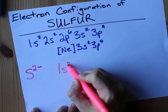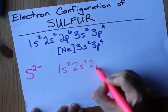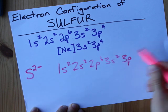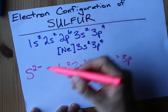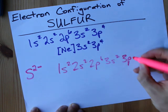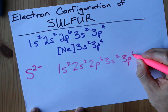You're just going to add them to the subshell that was only partially full before. So I can rewrite the whole thing. 1S2, 2S2, 2P6, 3S2, 3P. Now, it was 4 in the neutral atom. But when you have a 2 minus charge, you've got to add 2 to that. So that is 4 plus 2, which is 6.